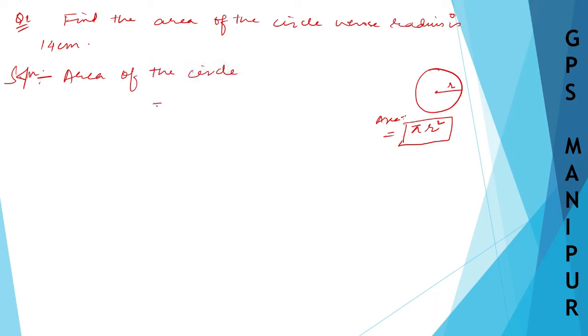Therefore, area of the circle is equal to π r squared. What is π? π is 22/7. What is r? r is 14. So 14 squared, which is 14 × 14.